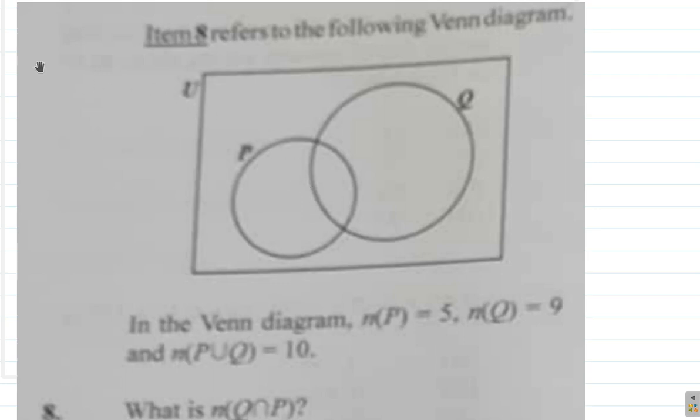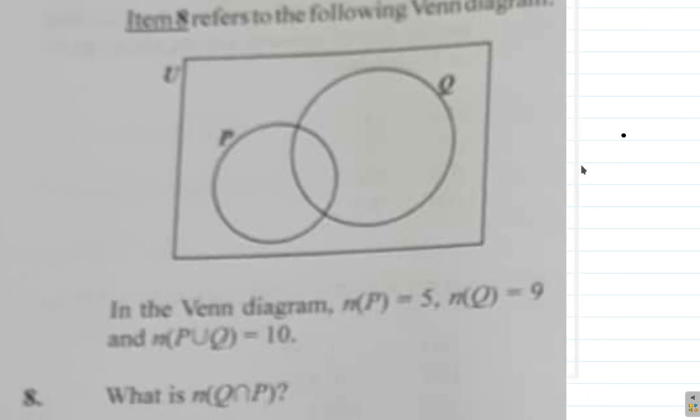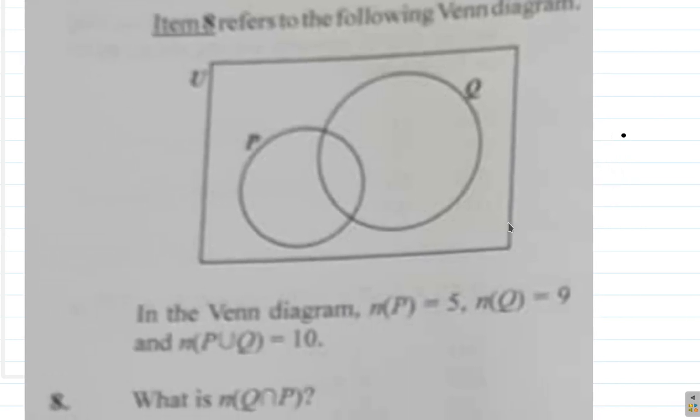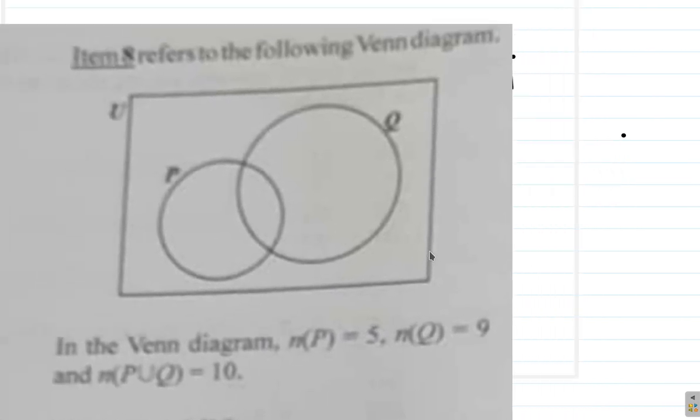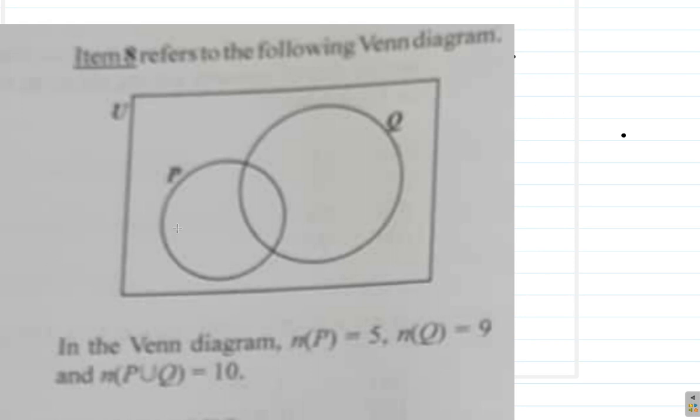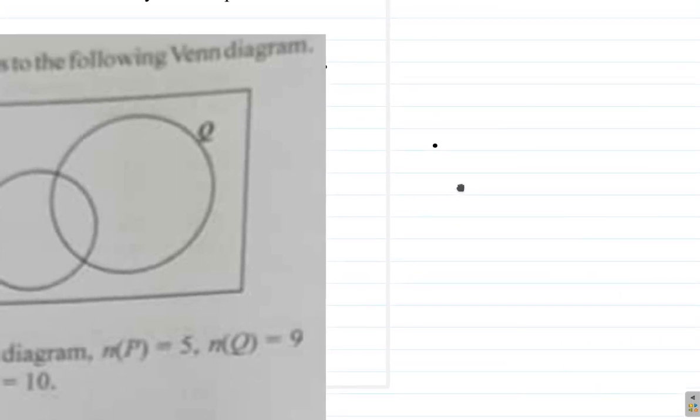Item 8 refers to the following Venn diagram. So you have a Venn diagram here. Let me just highlight it because the copy of this diagram is not very clear. Let me see if I can repeat the Venn diagram over here in case you're not seeing it clearly.